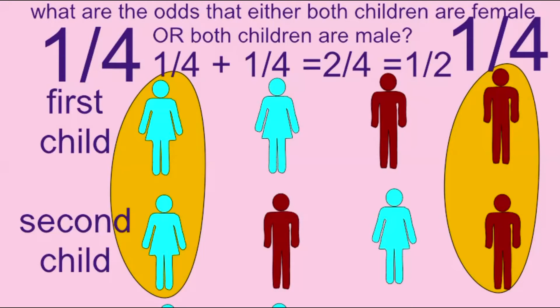Either one is true or the other, but not both. So, one would not use the product rule in this case. Instead, one would use the sum rule.